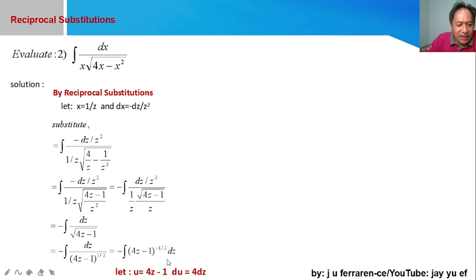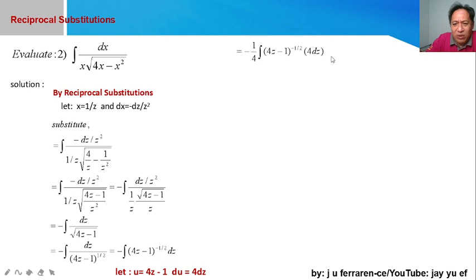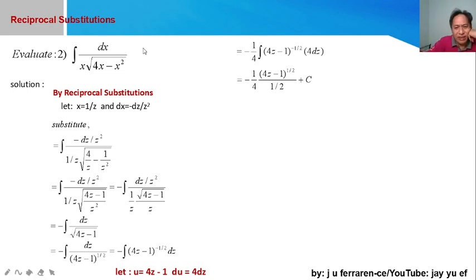The integral is now in the form of u^n du, where n = −1/2. Applying the power rule: increase the exponent by one, so −1/2 + 1 = 1/2. The result is u^(1/2) divided by (1/2), which gives us negative one-half times the square root of (4z − 1).